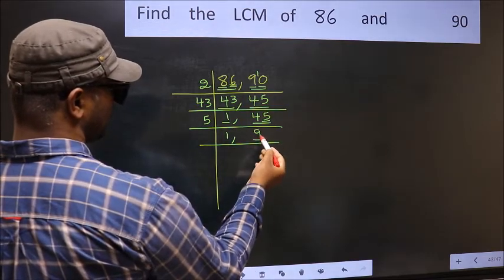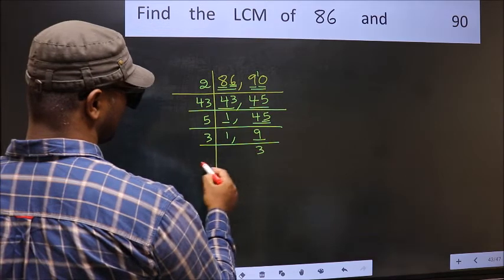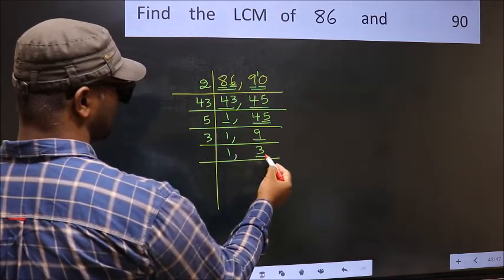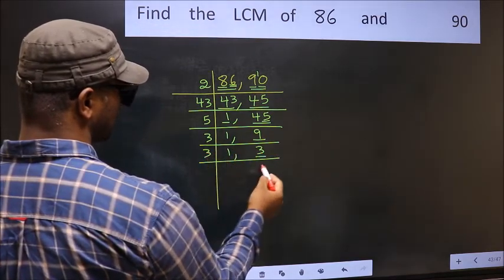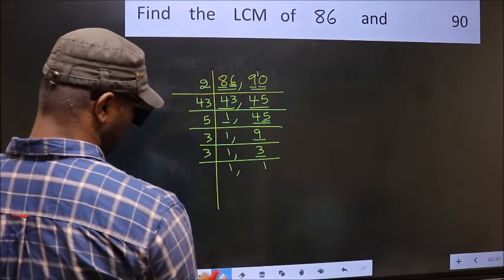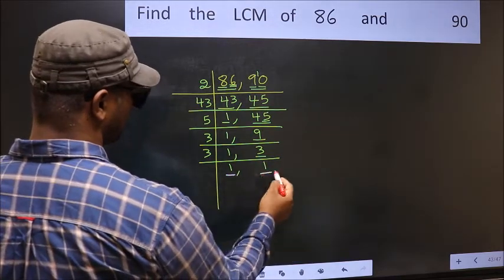Now we have 9. 9 is 3 times 3 is 9. Now we have 3. 3 is a prime number, so 3 times 1 is 3. So we got 1 in both the places.